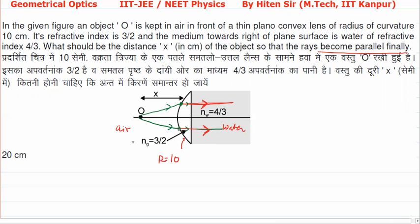Using the formula: (3/2 minus 1)/v minus 1/u equals (3/2 minus 1)/R. Where will the image be made? It will be at infinity, so rays come parallel from this surface. u will be minus x, and the radius of curvature will be plus 10.